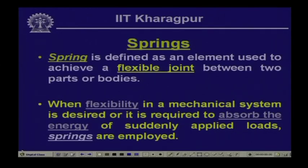Having looked into the answers to the previous questions, let us now discuss springs. A spring is an element used to achieve a flexible joint between two parts or bodies. Unlike structural elements such as beams or pressure vessels where deformations are not desirable, there are situations where we need deformations or flexibility to be introduced into the system, and for this we use a spring.